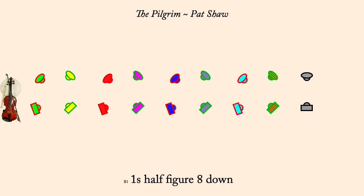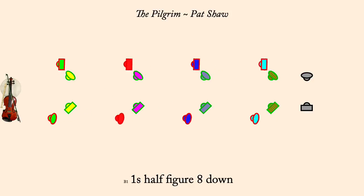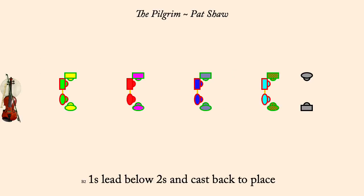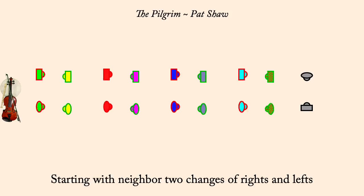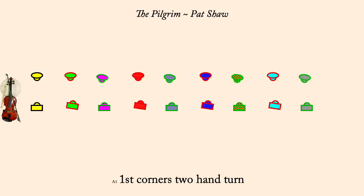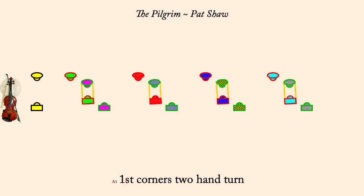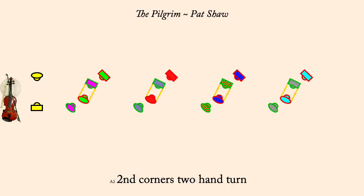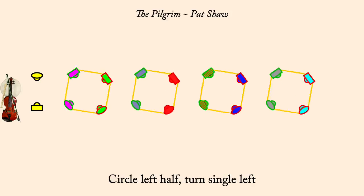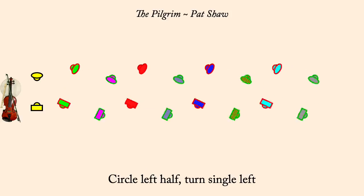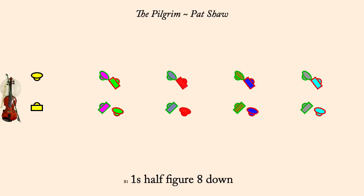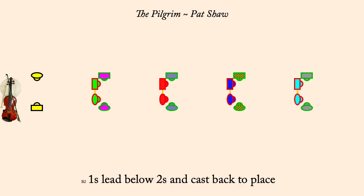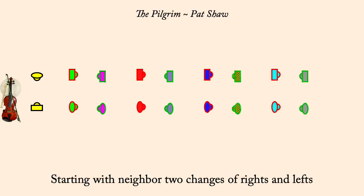Ones half figure eight down. Twos half figure eight up. Ones lead below twos and cast back to place. Face neighbor, two changes of rights and lefts.